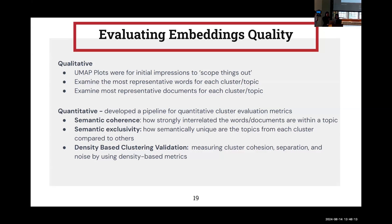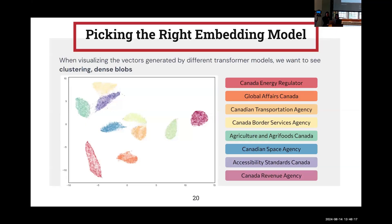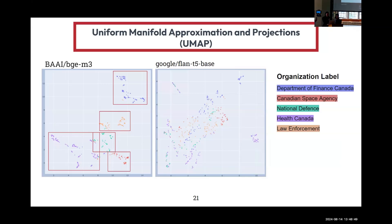Quantitatively, we can look at semantic coherence, which calculates how strongly interrelated words and documents are within a topic; semantic exclusivity, which looks at how semantically distinct different clusters are; and density-based clustering validation, which is a commonly used tool to evaluate cluster quality using cohesion, separation, and noise-based metrics. An intuitive way to understand this is through the UMAP embedding visualizations. When plotting the embeddings in 2D, we expect to see clustering in dense blobs when a model has successfully captured the meaning of our text data, where semantically similar texts are clustered together and semantically distinct ones are separate. Some embedding models will perform better, where there are distinctions between the different organizations, while others show overlap between different organizations and topics.